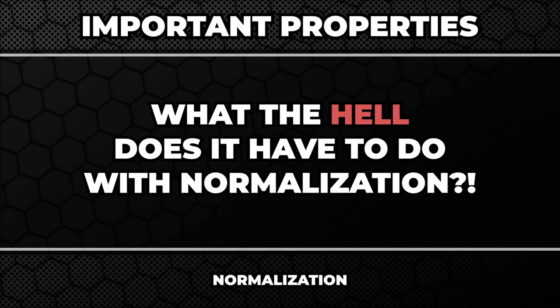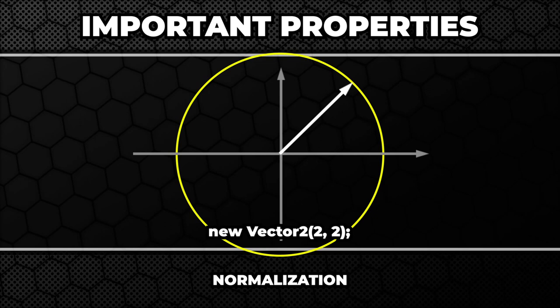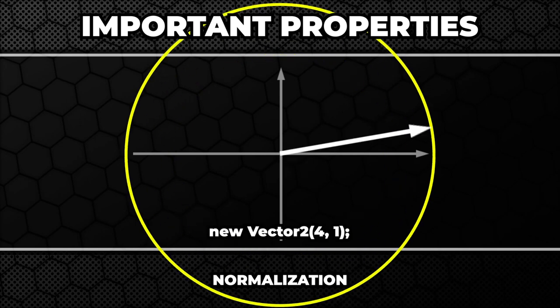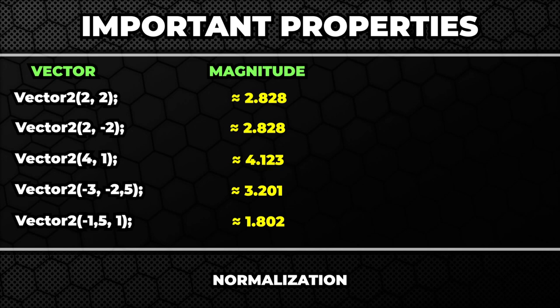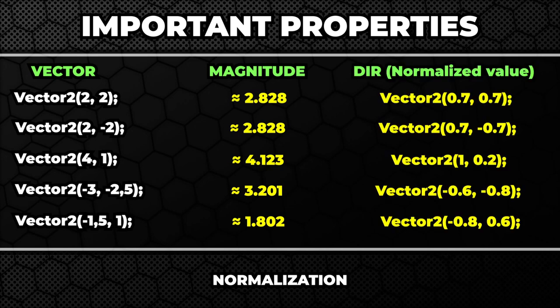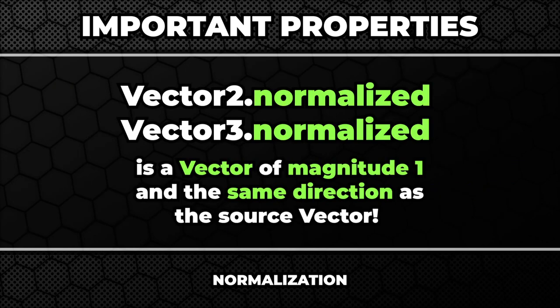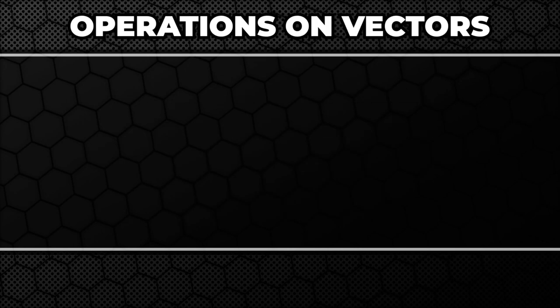You may wonder what this has to do with normalization. In most cases, vectors you will work with will point towards very odd directions. You will not be interested in their magnitude, but only in their direction. And that's what the normalized value is — it's basically a vector of magnitude 1 but having the exactly the same direction as the source vector.